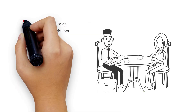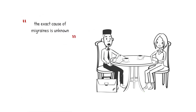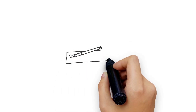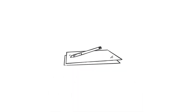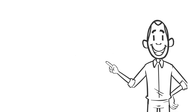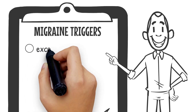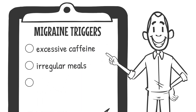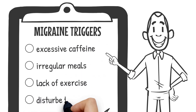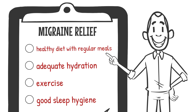Let's talk about some self-care tips for patients with migraines. Since the exact cause of migraines is unknown, keeping a diary to identify migraine triggers is useful. Commonly mentioned triggers include excessive caffeine, irregular meals, lack of exercise, and disturbed sleep. The way to tackle these things is to adopt a healthy diet with regular meals and adequate hydration, exercise, and good sleep hygiene.